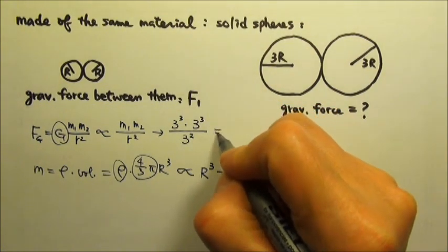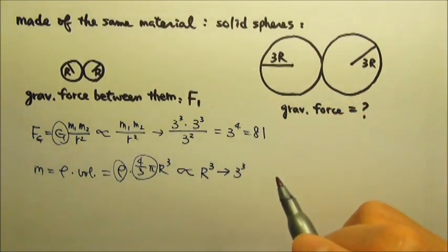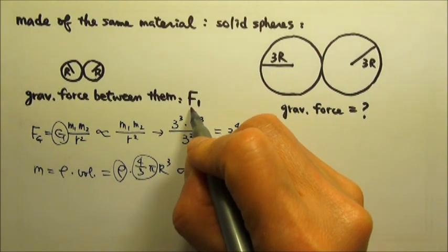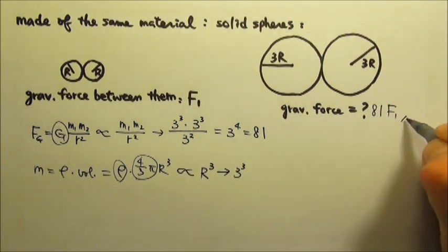So this is what we have, which gives us 3 to the fourth, 81. So the gravitational force for this one is 81 times that force. So it's 81 times F1.